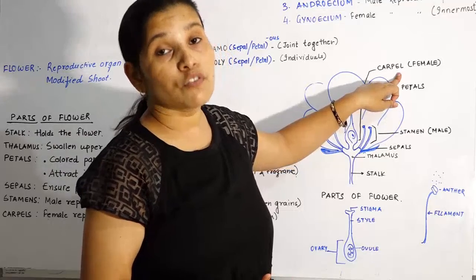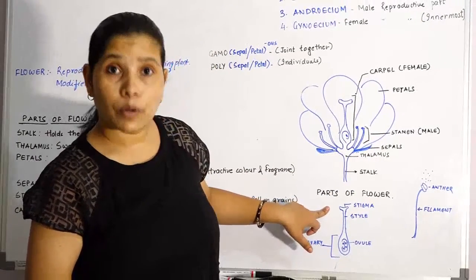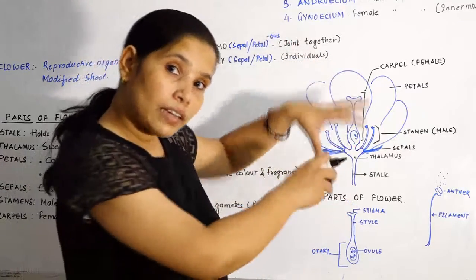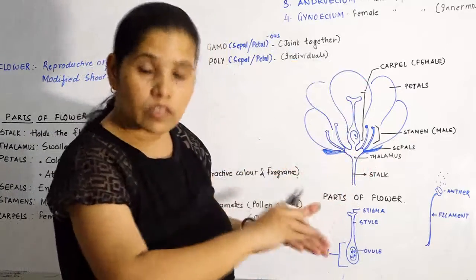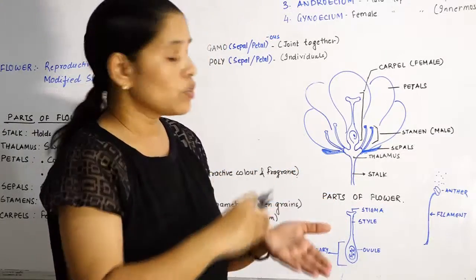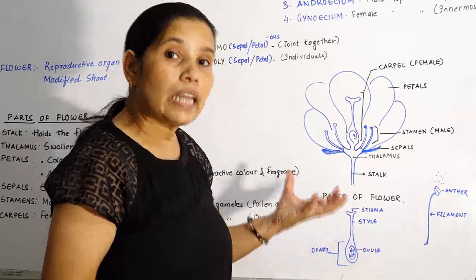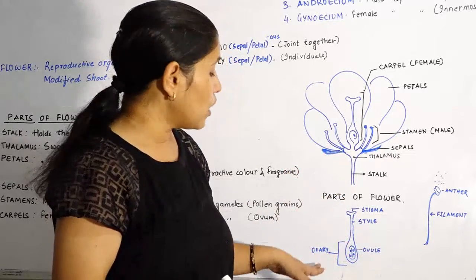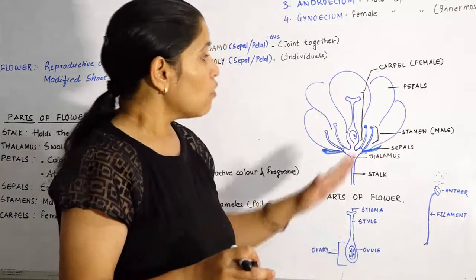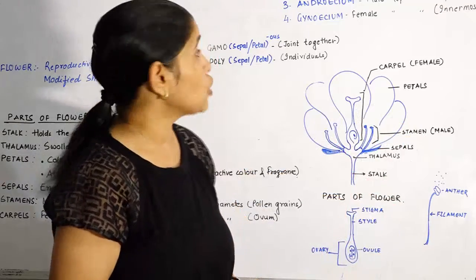Now the carpel is the female reproductive part of any flowering plant. In an enlarged view of this female reproductive part, the upper portion is the stigma. On this stigma, pollen grains get deposited — they settle on the stigma. Below is the tubular structure called the style. The quite enlarged portion below is the ovary. Ovary consists of ovules, and ovules are the female gametes. So pollen grain is the male gamete and ovule is the female gamete. When both get fertilized, they carry out the process of sexual reproduction in flowering plants.